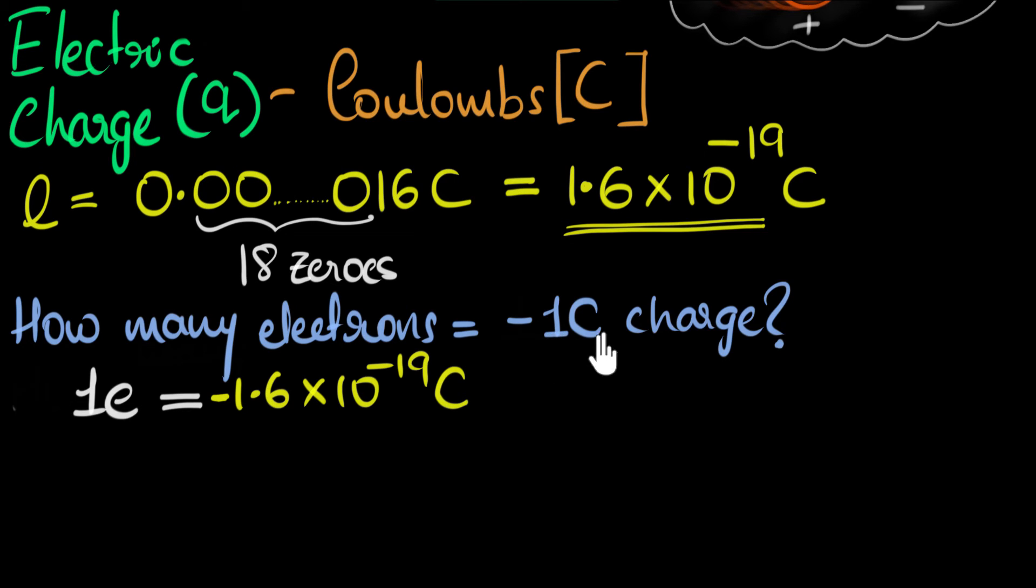But I want one coulomb worth of charge, not this. So to make this right-hand side one coulomb, I will divide the right-hand side. Let's divide the right-hand side by 1.6 times 10 to the minus 19. So that this will cancel and become negative one coulomb. So I will have to divide the left-hand side as well by 1.6 times 10 to the power minus 19.